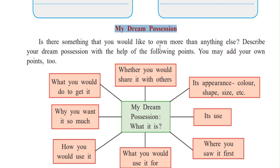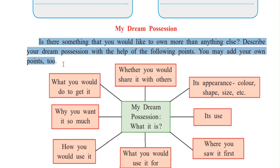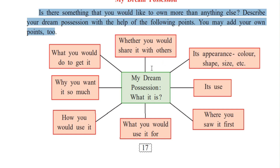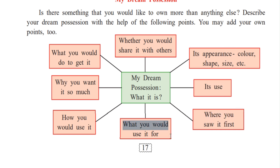We all wish so many things, isn't it? We wish that we had this, we had that. Even you may be having some wishes. Is there something that you would like to own more than anything else? Describe your dream possession with the help of the following points — you may add your own points too. Write down your dream possession and answer these following questions: whether you would like to share it with others; its appearance — colour, shape, size; its use — what would you use it for; where you saw it first; how would you use it; why you want it so much; why you wish to have it; and what would you do to get it — how will you achieve that and get it? So, write this down.